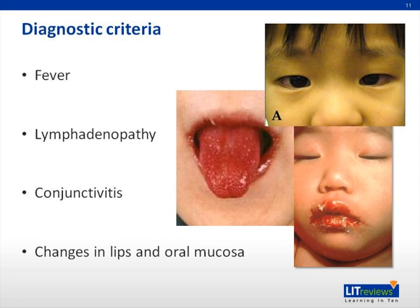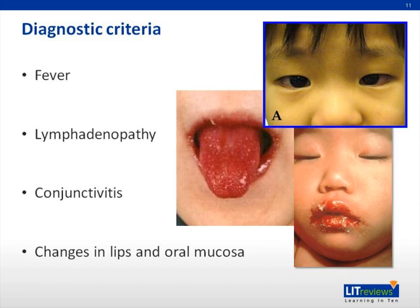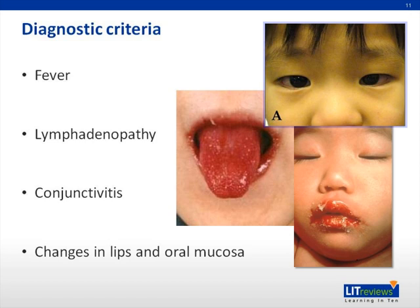Kawasaki disease typically begins with an abrupt onset of persistent fever that often exceeds 101 degrees Fahrenheit, and is minimally responsive to antipyretics. Swollen, cracked red lips and a strawberry tongue are characteristic of Kawasaki disease, as evident in the bottom two pictures. Bilateral, non-exudative, bulbar conjunctivitis is also common, and typically spares the limbus, as depicted in the most upper picture. Patients may also exhibit photophobia. The cervical lymphadenopathy in KD is typically unilateral, and one node must measure greater than 1.5 centimeters in diameter.